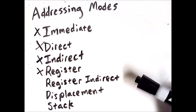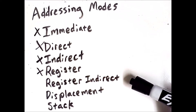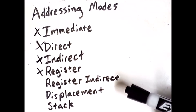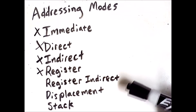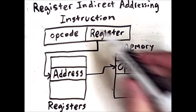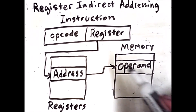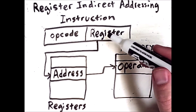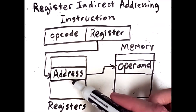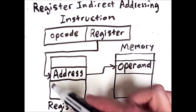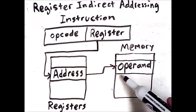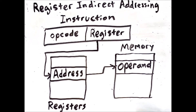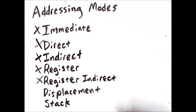The next approach combines registers and memory — it's called register indirect. In this case, a register contains a memory address which is accessed to retrieve its contents. With register indirect addressing, we have an opcode and a register in the actual instruction. The register refers to a register that contains a memory address which actually contains the operand that the instruction will operate on.